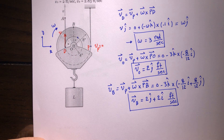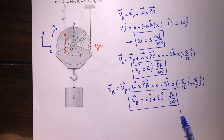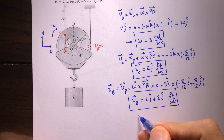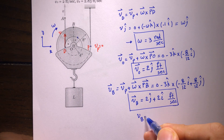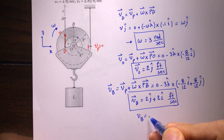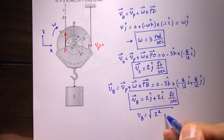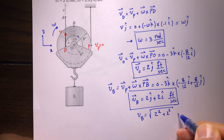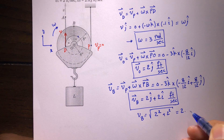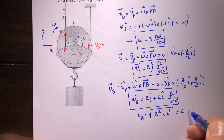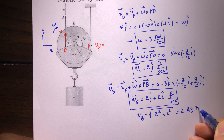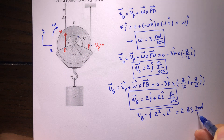We can find the velocity of any other point on this rigid body, such as point B. The magnitude of the velocity of B is the square root of 2² + 2² = 2.83 feet per second.